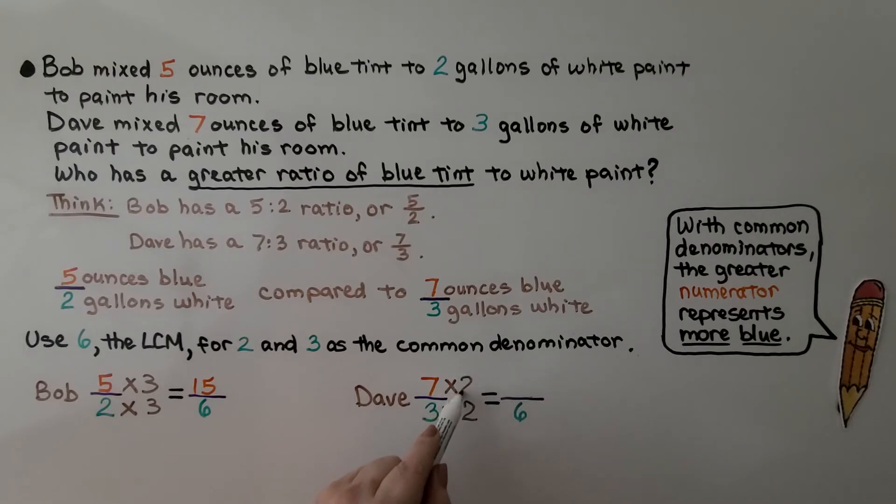7 wants to be multiplied by 2. And that gives us 14 for our new first term, our new numerator. Now we can compare them. We have 15 6 compared to 14 6. The numerator represents blue. We know Bob has a greater ratio of blue in his paint than Dave does.